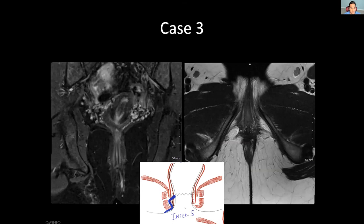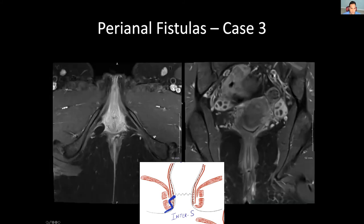Now let's switch to an inter-sphincteric fistula, case three. On T2, there's some signal in the left ischioanal fat, and importantly there is a small black dot visible in the fistula - that is a seton in place. The next image makes more sense: the fistula tract never goes beyond the external sphincter - it stays in the inter-sphincteric space. It is a low left inter-sphincteric fistula. On the axial plane, you can see it hugging the internal sphincter and never going further out laterally.